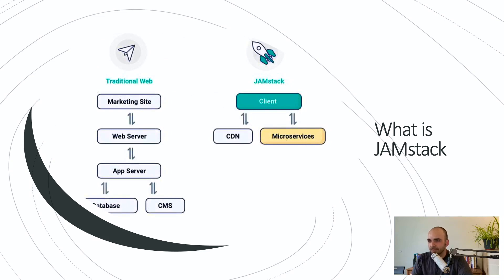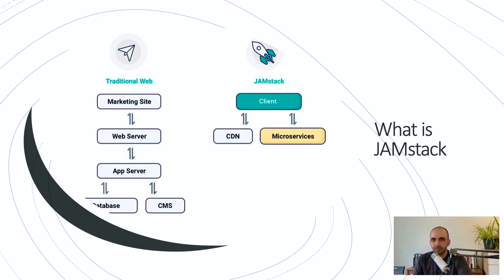So what is JAMstack? On the left side we have traditional web development — a marketing website tightly connected to a web server. Every page rendered calls the web server, which renders it. You can have an app server, business logic, a database, models — as many tiers as you see. By 'traditional' I don't mean very long ago; JAMstack was introduced in 2016 by the CEO of Netlify and it took the world by storm.